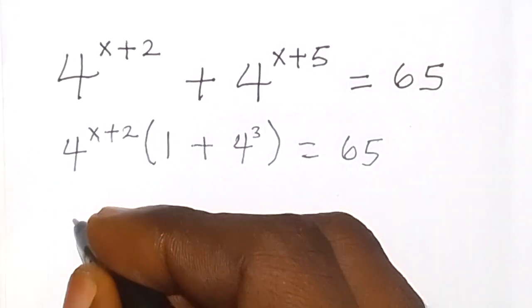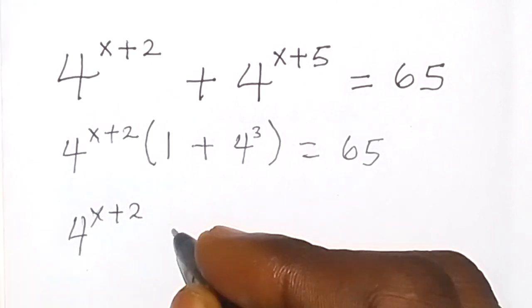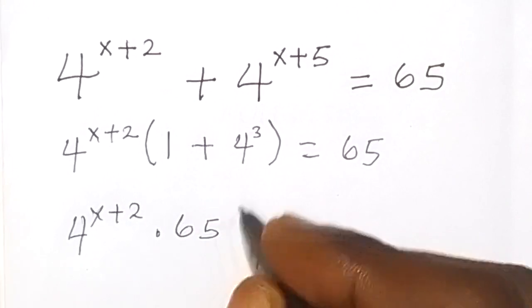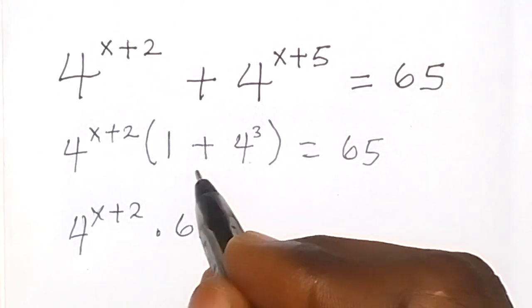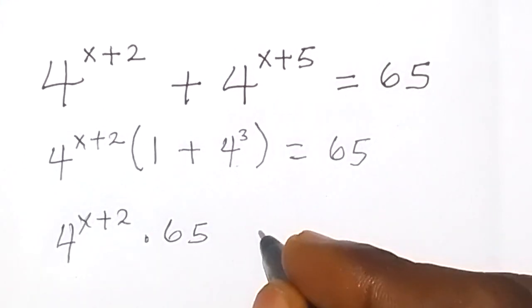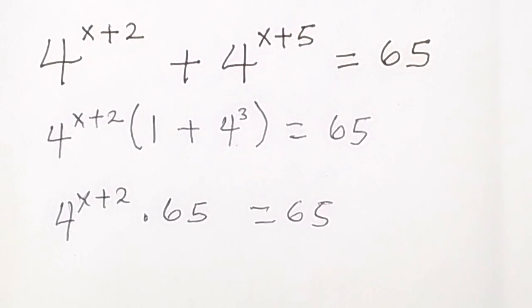And then we can say this is 4 raised to power x plus 2 multiplied by 65, because this is 64, and 64 plus 1 is 65. And from there, it also equals to 65.